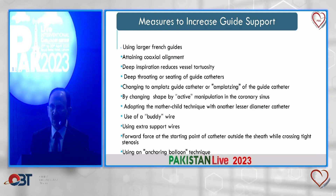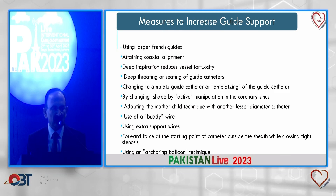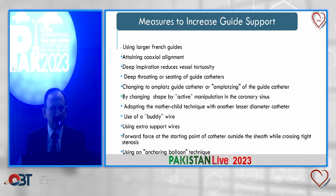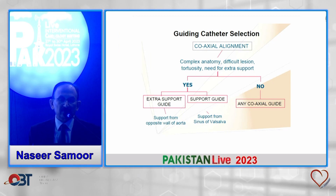There are various maneuvers the operator can perform during the procedure. One can choose a larger French guide for more support, and coaxial alignment has already been mentioned. Deep seating the guide can give better support, and one can switch to a different guide such as an Amplatz catheter. The mother-and-child technique, buddy wire, active support wires, pushing the guide forward outside the sheath while crossing the lesion, and an anchor balloon are all useful options.